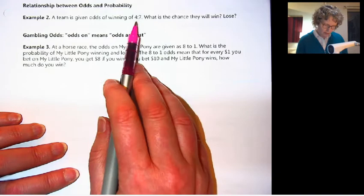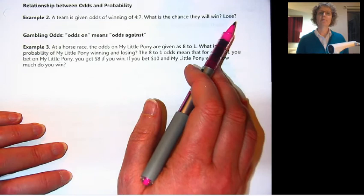A team is giving odds of winning of four to seven. What's the chance they will win? What's the chance they will lose?